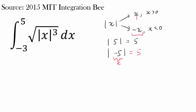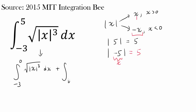Let's break this integral to simplify the absolute value of x. We split it into the integral from negative 3 to 0 of the square root of the absolute value of x cubed dx, plus the integral from 0 to 5 of the square root of the absolute value of x cubed dx. We're simply splitting the range from negative 3 to 5 into negative 3 to 0 and 0 to 5, and adding them up.